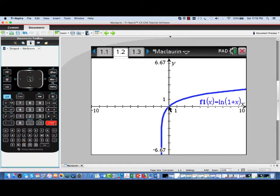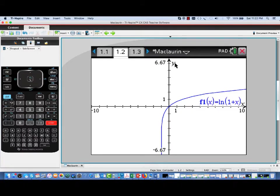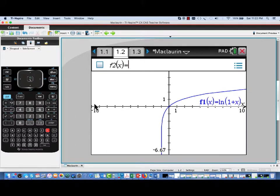So I'm going to enter that as f1, and here we've got the graph of it. And now I'm going to enter a general Taylor polynomial about x equals 0.